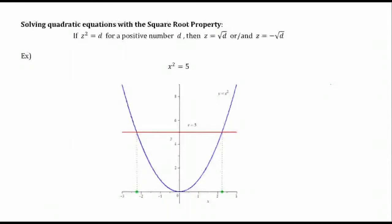So if you square the square root, you get what's inside the radical. If you square the negative square root, you square the negative — it becomes positive — you square the square root, and it gives you what's underneath the radical.